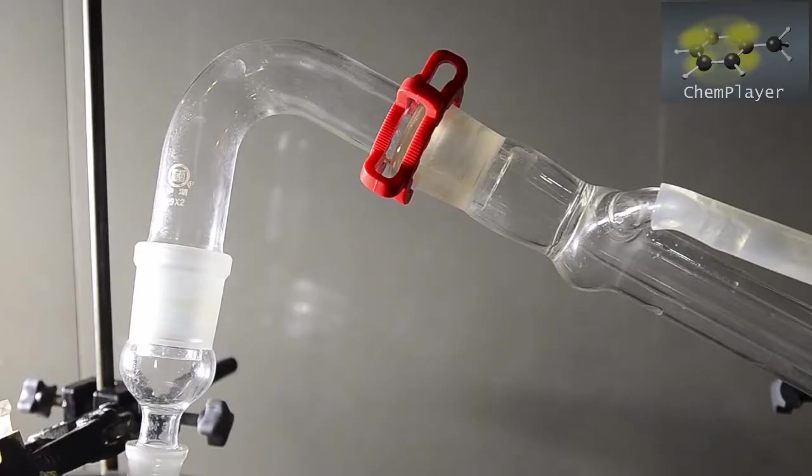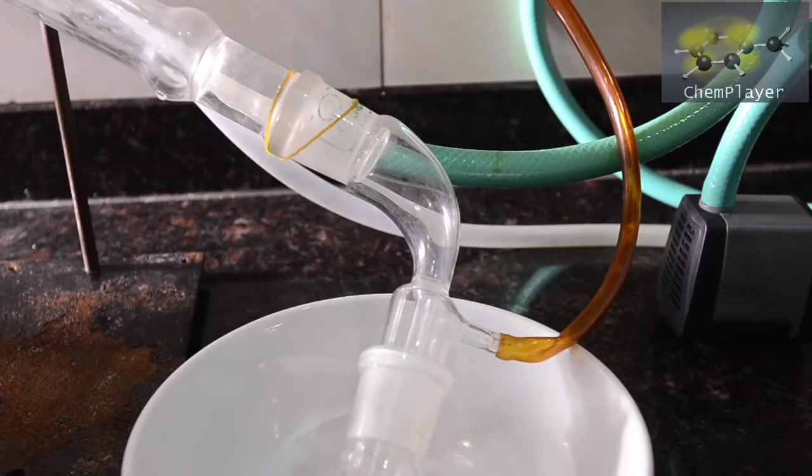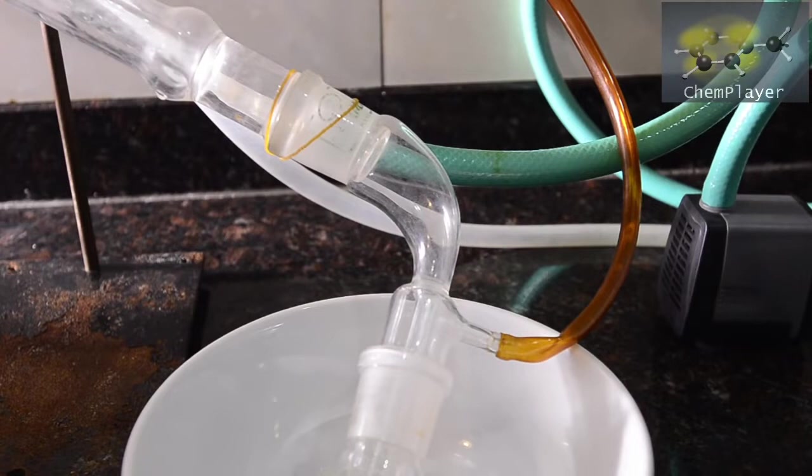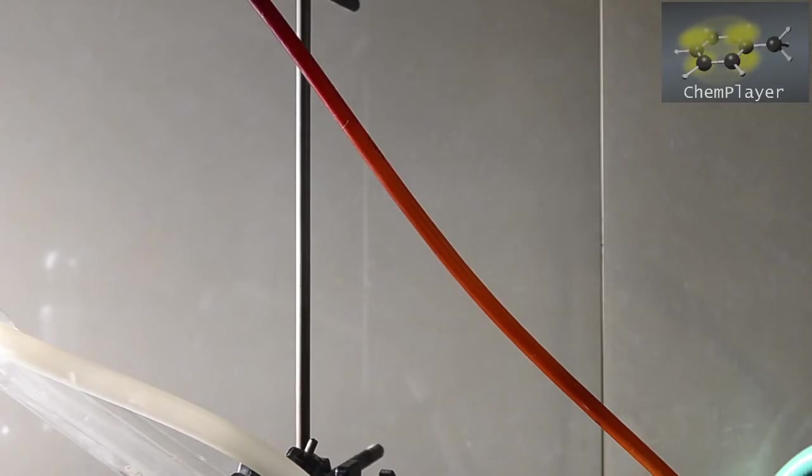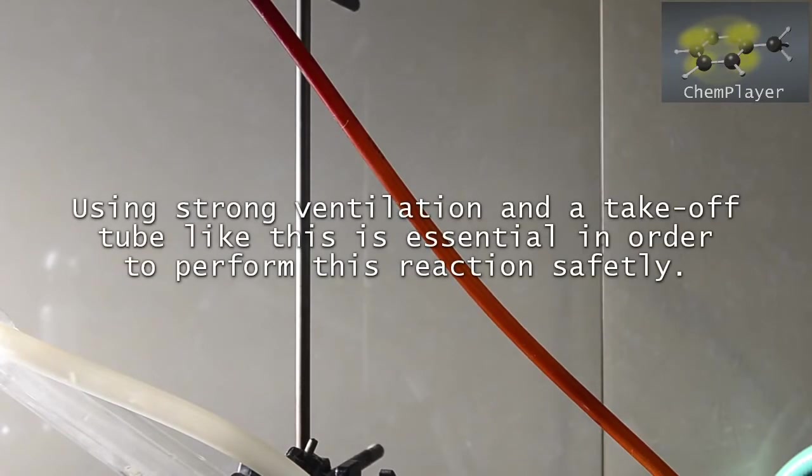The adapter then leads to a tube and condenser. And then we've got the receiving adapter and a small flask sitting in a bowl. We've also got a takeoff using an old nasty bit of plastic tubing. And this leads up to our extractor and means we hopefully won't die of nitrogen dioxide poisoning.